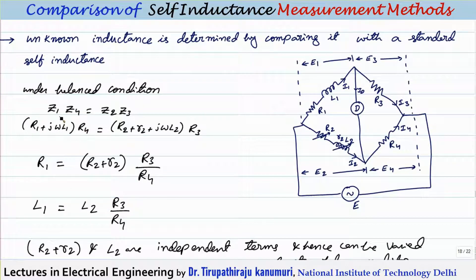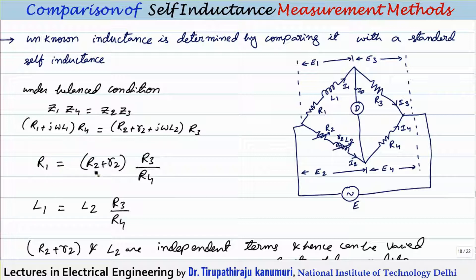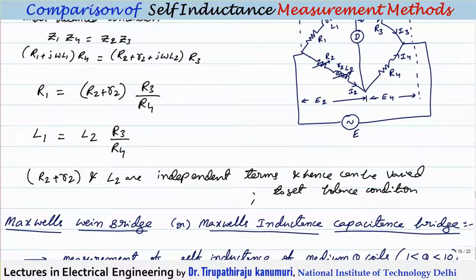Under balanced condition, the product of opposite branches must be equal: Z1 × Z4 = Z2 × Z3. Substituting the formulas and comparing real and imaginary terms, we get R1 = R2 + (r2 × R3)/R4, and the unknown inductance L1 = L2 × R2/R3.